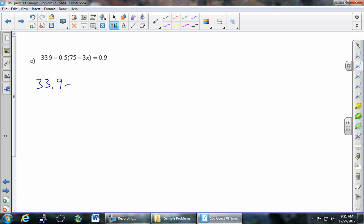0.5 times 75 is 37.5. 0.5 times 3 is 1.5. And be really careful about the sign that goes in between. There's a minus and another minus. And together they make a plus in there. And that's still equal to 0.9.